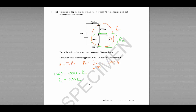We're getting closer to our answer. We have these two resistors in parallel: we know one is 750 ohms, and the other is the unknown R, with a combined total of 500 ohms. So we use the resistors in parallel equation. The total resistance here is Rx, so 1 divided by Rx equals 1 divided by 750 plus 1 divided by R. We know Rx is 500.